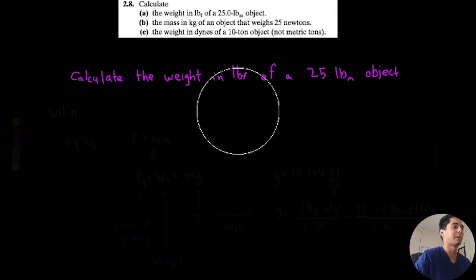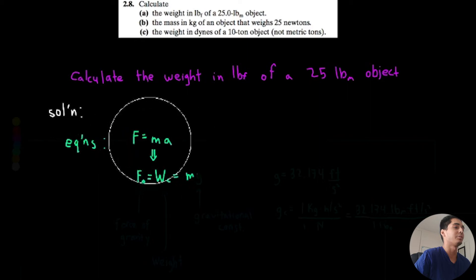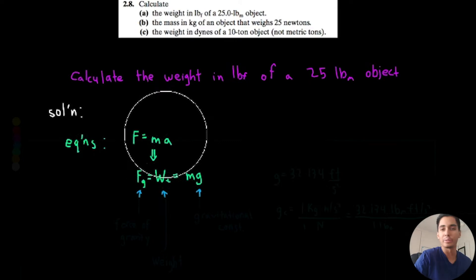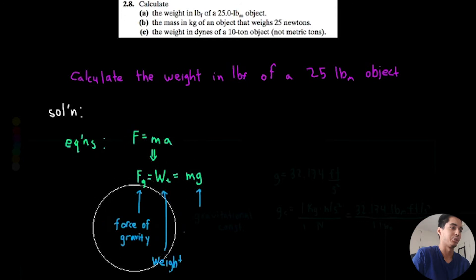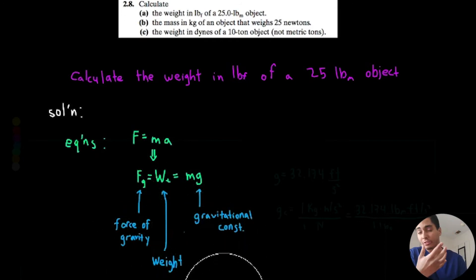Before we get into this let's do a couple review equations. So remember Newton's second law F equals ma, mass times acceleration. Weight is the force of gravity, Fg, and it's equal to mass times gravity. So we have force of gravity, weight, and gravitational constant.